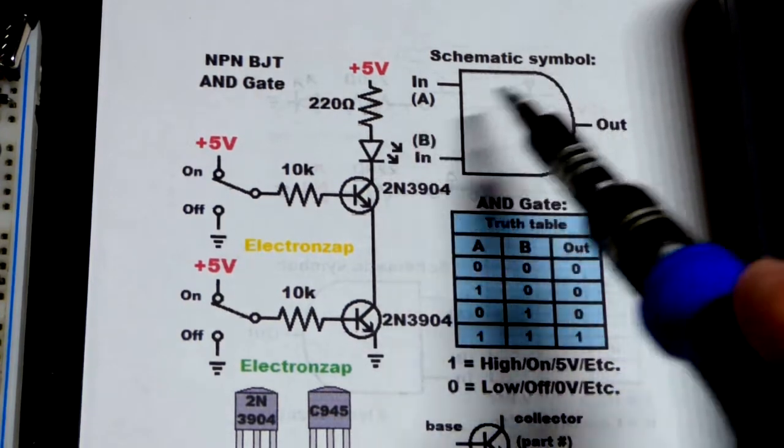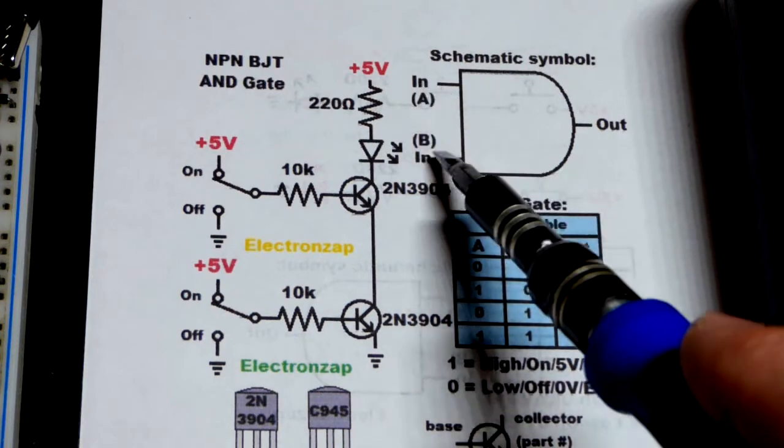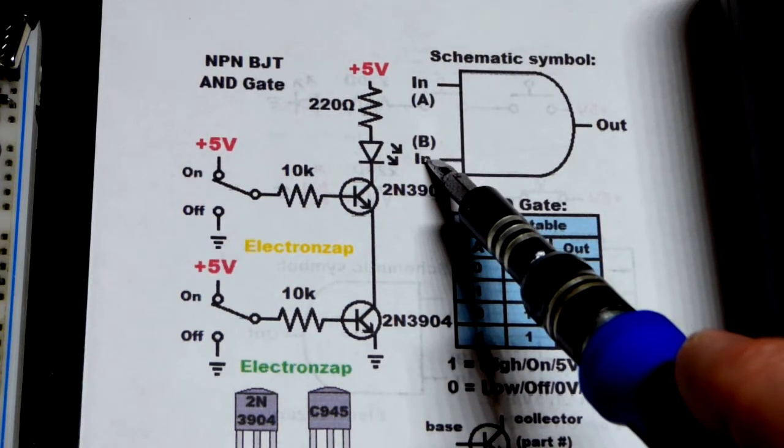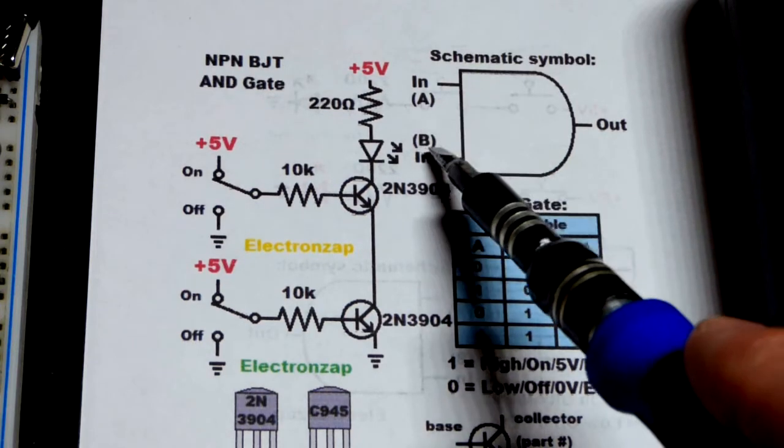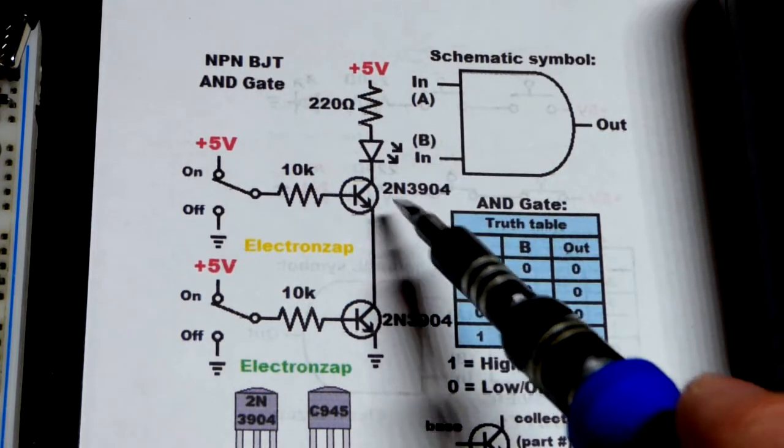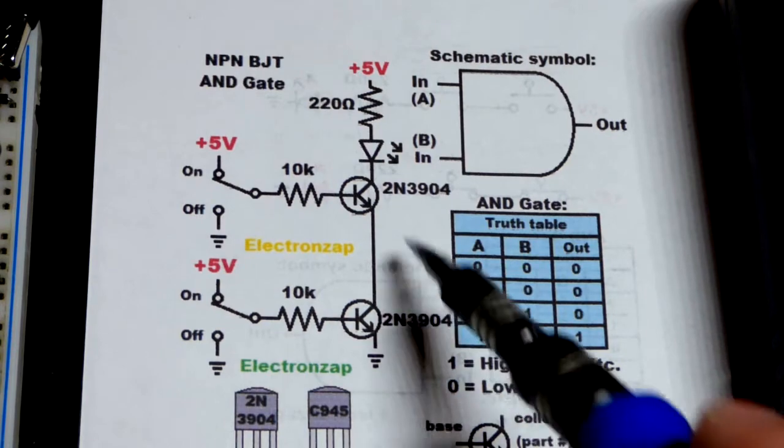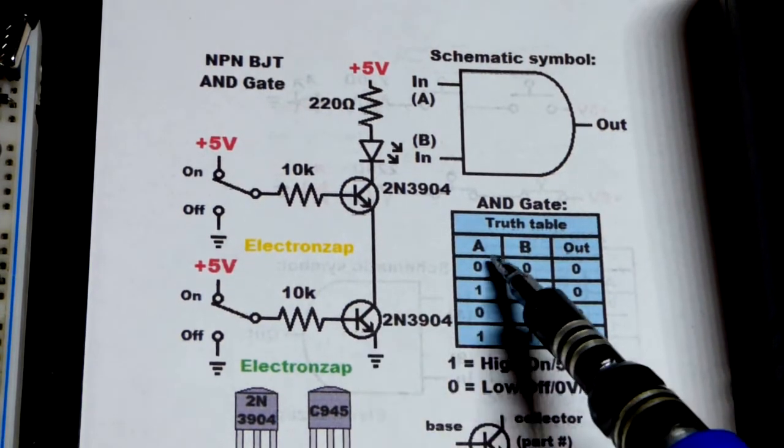So there's the schematic symbol for AND gate circuitry. There's a couple inputs. If it's a two input there can be more inputs and they're usually labeled A and B if there's two of them. I forgot to write A and B on there, but we can call that one A and that one B.